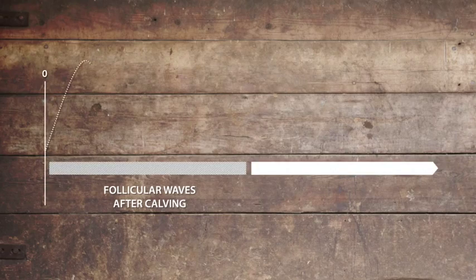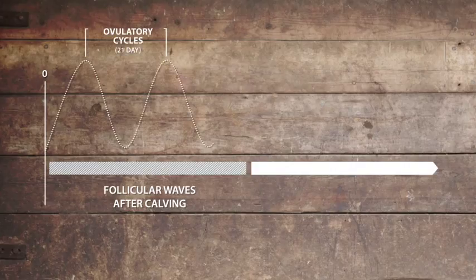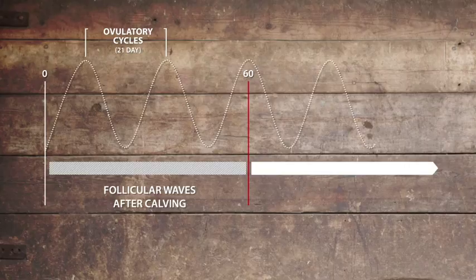Similarly, after calving, cows start to grow groups of follicles called follicular waves. Cows usually ovulate for the first time at about 20 to 60 days after calving.